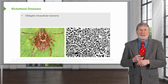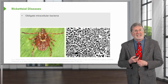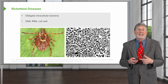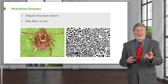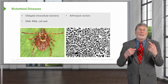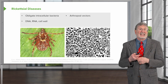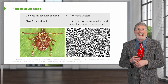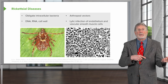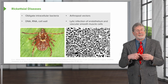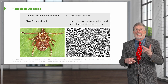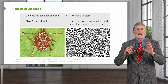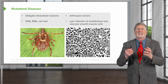Moving further up the phylogenetic tree, we're going to talk about rickettsia — again, another obligate intracellular bacteria. It has DNA, RNA, and a cell wall. The reason you're seeing a tick is that it is transmitted by arthropod vectors — all of the rickettsiae are. It has a particular tropism that gives it its pathology: rickettsia likes to go to endothelium and vascular smooth muscle cells, so it tends to be a vascular-tropic, lytic infection.